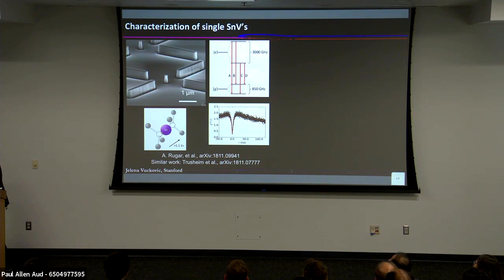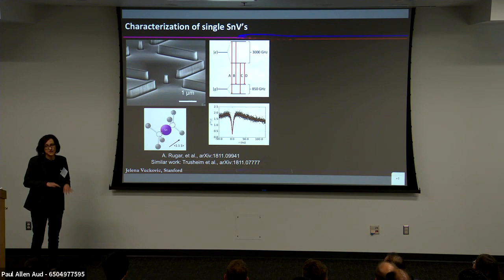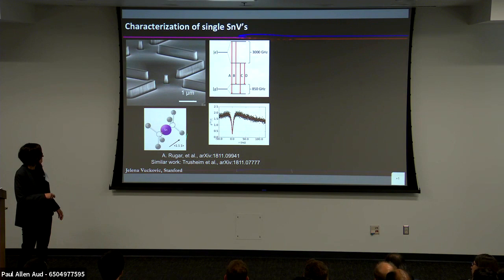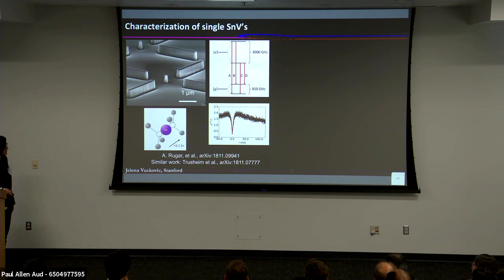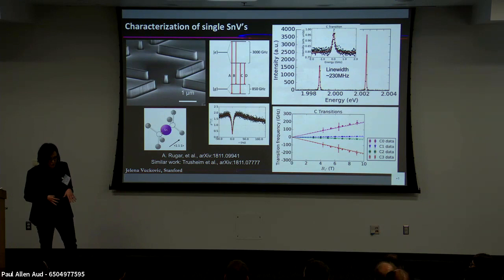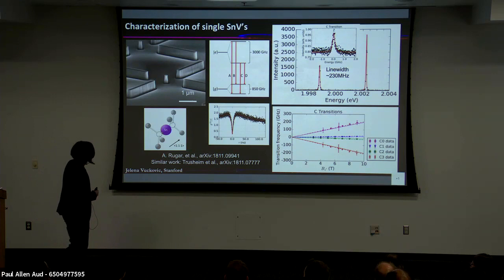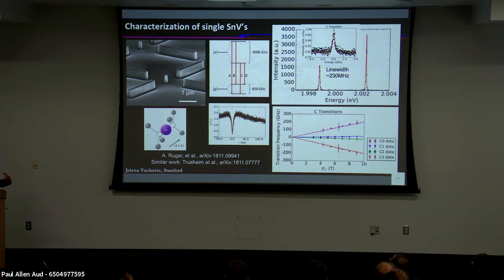In parallel with our work, similar discoveries were made by the groups of Dirk Englund at MIT and also at Cambridge. We at Stanford embedded tin vacancy inside diamond structures, analyzed properties of a single color center — confirmed it's a single-photon source — measured linewidths, energy levels, and did magneto-optical spectroscopy studying properties in magnetic field. Everything matches theory. We haven't measured electron spin coherence times yet, but we're working on that and on embedding it in optical structures. If all works well, this is a much better substitute for silicon vacancy for experiments at few-Kelvin temperatures.